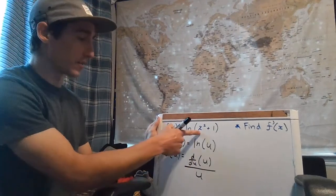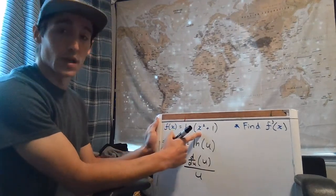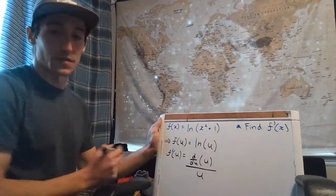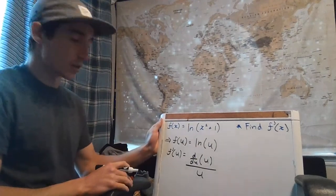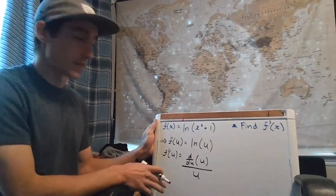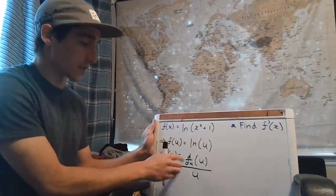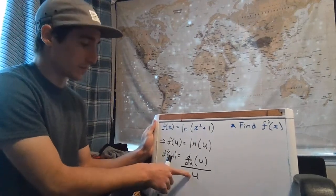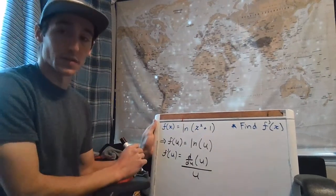Of course, it gets more complicated than that. Here we're dealing with x squared plus 1, which is a little more complicated than u, and you'll see things that are more complicated than that too. But this is the general formula—you just take the inside function, take the derivative of it, and then divide it by whatever it was originally.